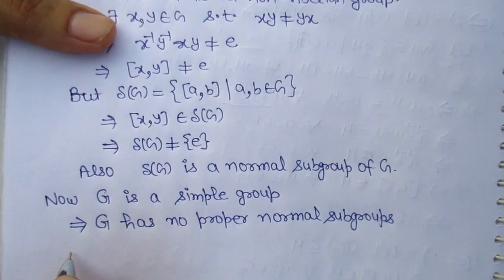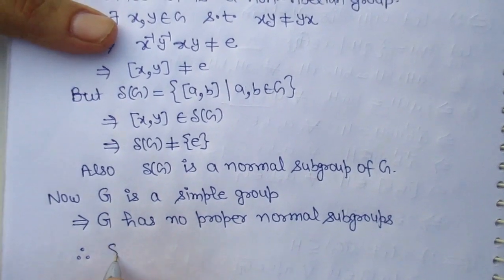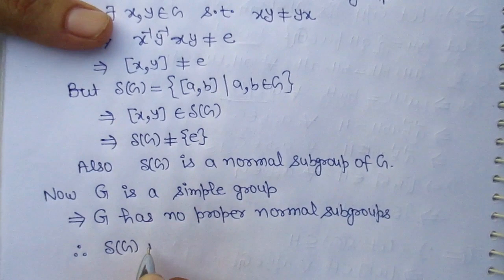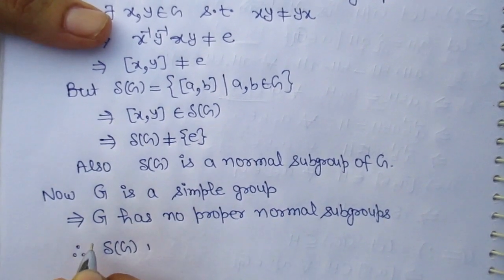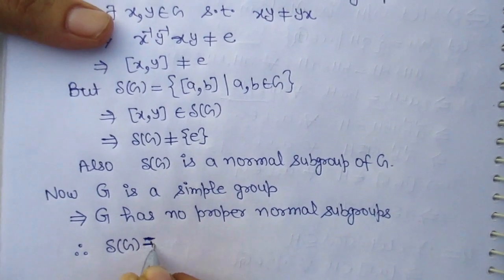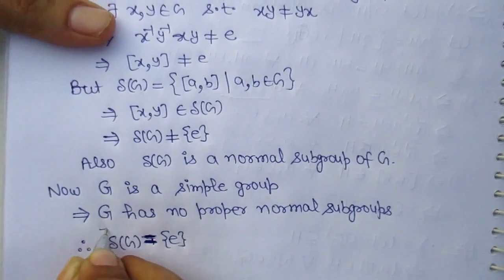Therefore delta G is equal to identity group or delta G is equal to G.